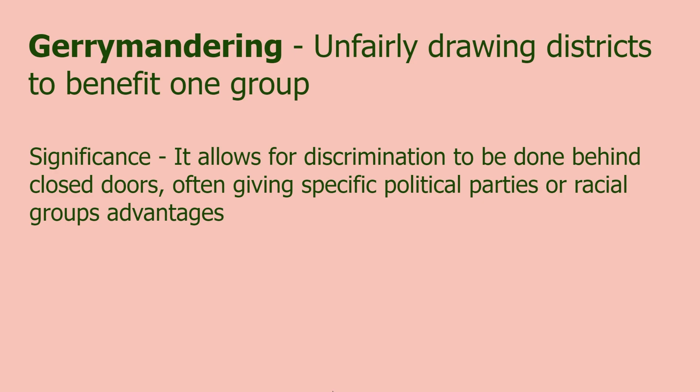Gerrymandering: unfairly drawing districts to benefit one group. This is a more malicious type of redistricting that allows for discrimination behind closed doors, often giving specific political parties or racial groups advantages. Since state legislatures play a large part in redistricting, if dominated by one party or one race, they might draw district lines that hurt certain groups. They might pack heavy-Republican localities with one heavily-Democratic town, or consolidate all Black localities into one district giving them only one representative while white localities get all the others. Look at Supreme Court cases like Shaw v. Reno — some of those district maps are pretty crazy.